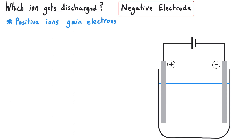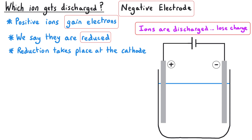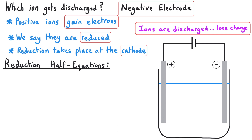You need to be able to write half equations for the reactions occurring at the electrodes during electrolysis. At the negative electrode, the positive ion gains electrons and the ions are discharged — they lose their charge. Because it is gaining electrons, we say that the ion is being reduced. The electrode where reduction takes place is called the cathode. So the reduction half equation depends on the ions involved.